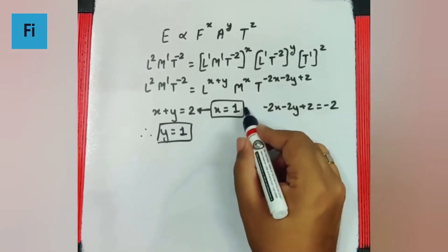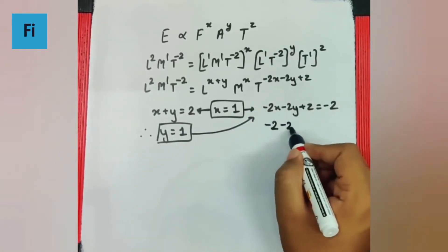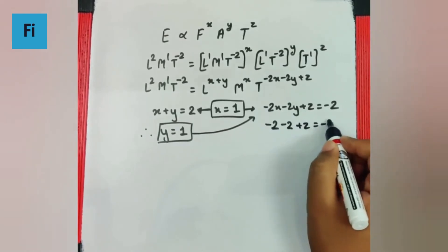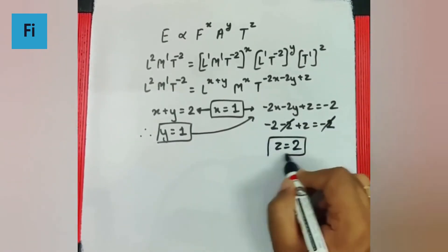And if x and y here substitute, then minus 2 minus 2 plus z is minus 2, then minus 2 gets cancelled, z ka value ho jayega 2.